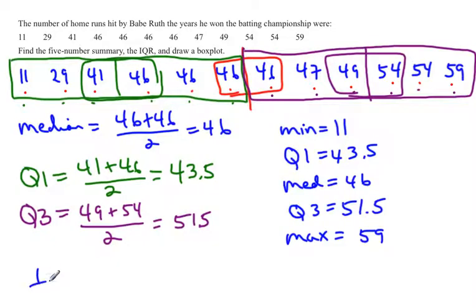Now to find the interquartile range. The interquartile range is just Q3 minus Q1. So in this case, it would be 51.5 minus 43.5, which is actually equal to 8.